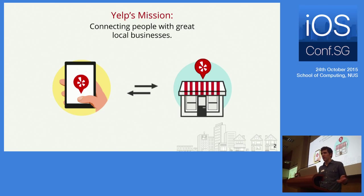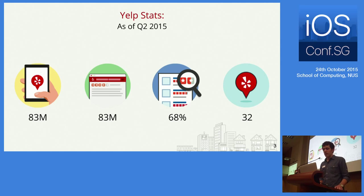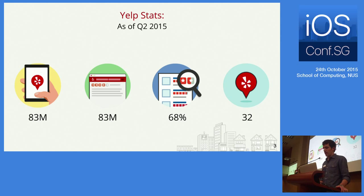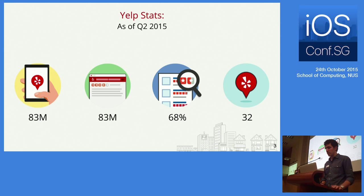Just by a show of hands, who here has used Yelp before? Yelp's mission is to help people connect with great local businesses. Every month, Yelp sees 83 million unique visitors come from mobile. Since Yelp's inception, users have contributed more than 83 million reviews, and 68% of all searches on Yelp come from mobile. Yelp is available in 32 countries, and has been in Singapore for about three years, since September 2012.